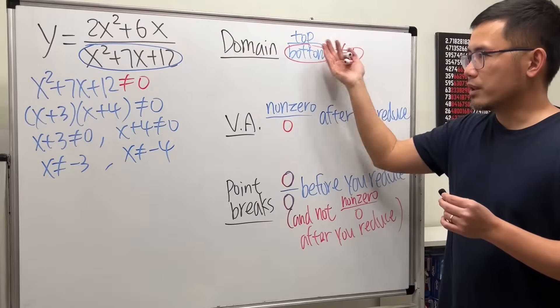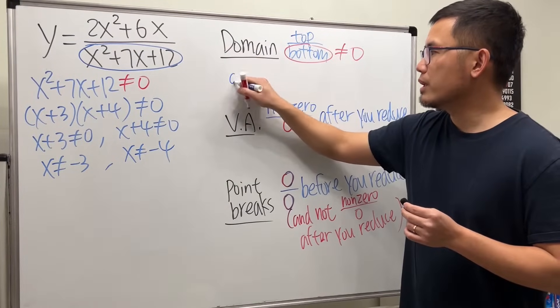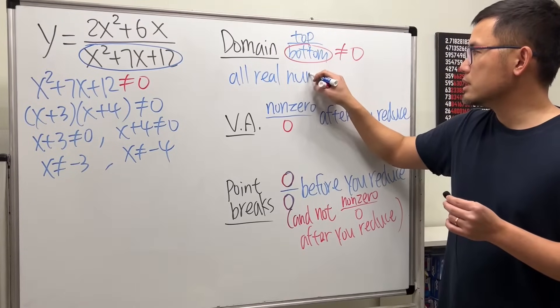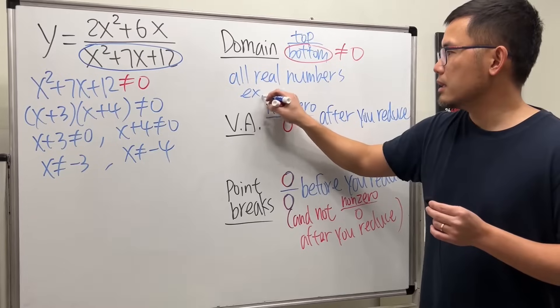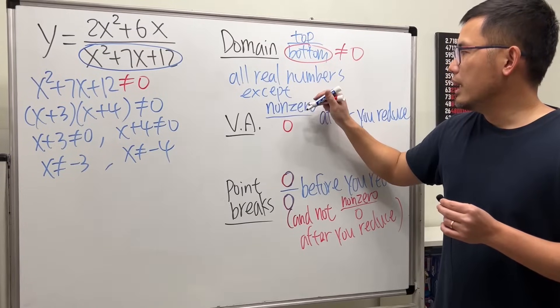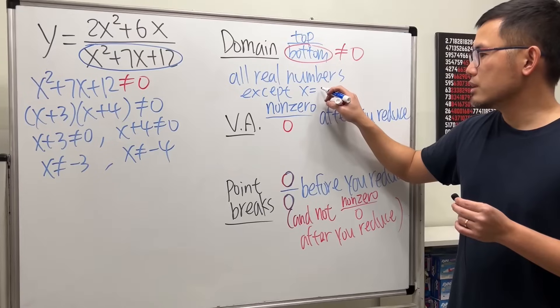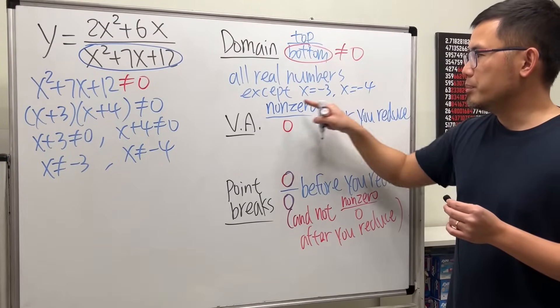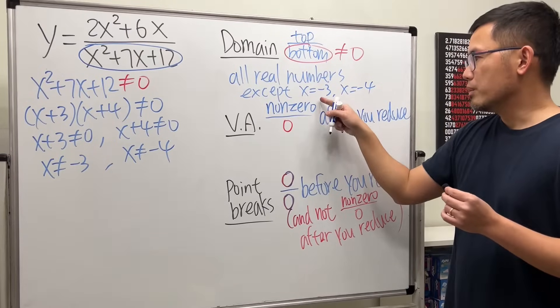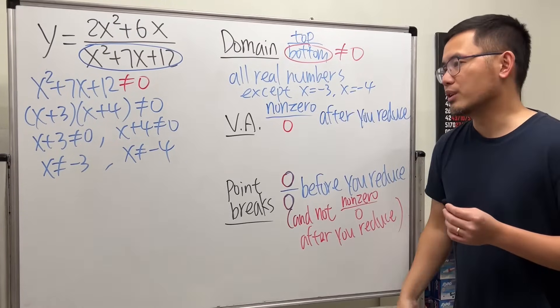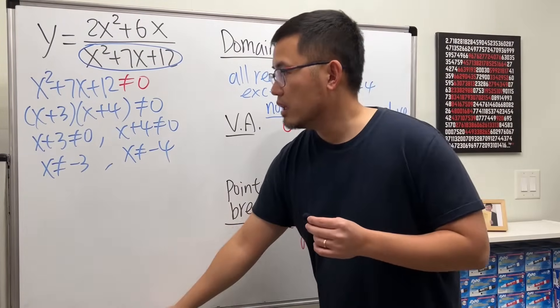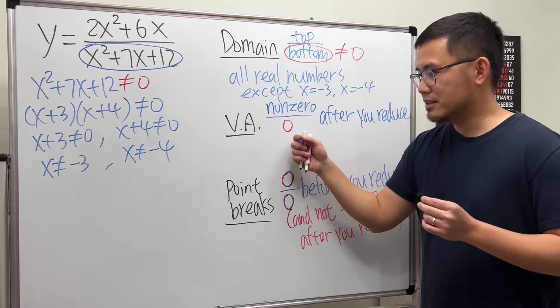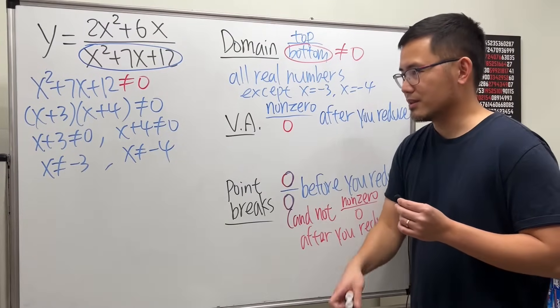So the domain for this rational function is all real numbers, except x equals negative 3, x equals negative 4. I put an equal sign here because I used the word except. So meaning except for these two values. But anyway, this right here helps. This and that. Now, this is how we do it.